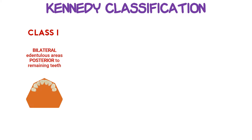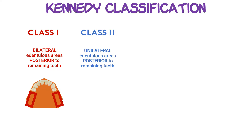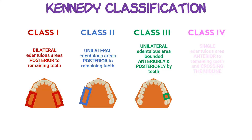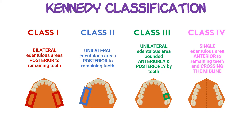Class 1 is for bilateral edentulous areas posterior to the remaining teeth. Class 2 is just like Class 1 except it's only unilateral edentulous areas posterior to the remaining teeth. Class 3 is a unilateral edentulous area that's surrounded by teeth both on the anterior and posterior. Class 4 refers to a single edentulous area anterior to the remaining teeth and crossing the midline.